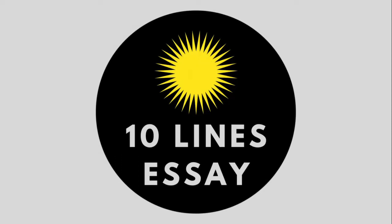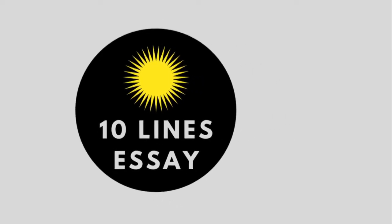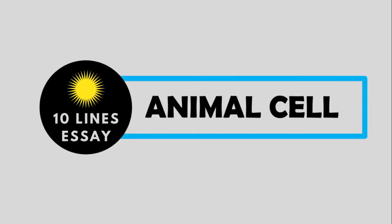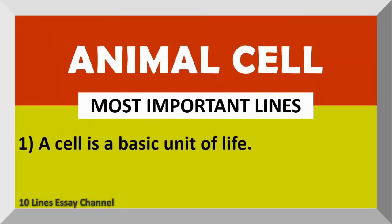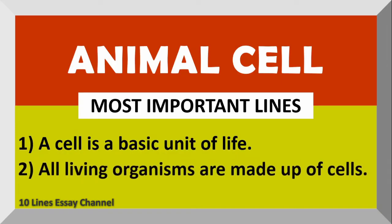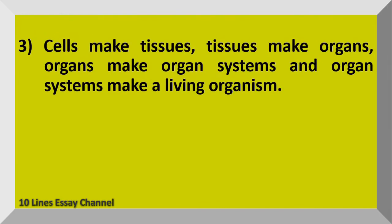Hello everyone, welcome to my channel. This video is about animal cells. A cell is a basic unit of life. All living organisms are made up of cells. Cells make tissues, tissues make organs, organs make organ systems, and organ systems make a living organism.